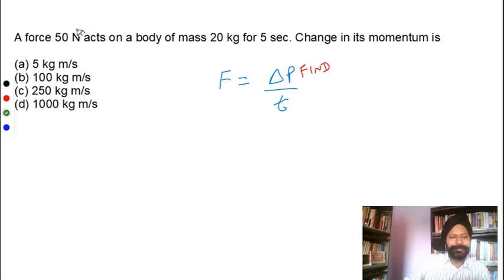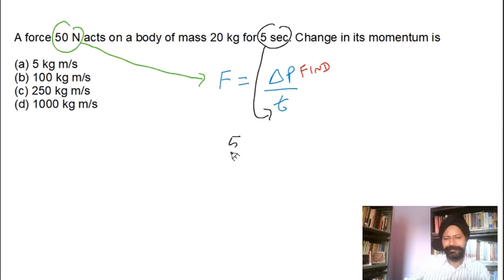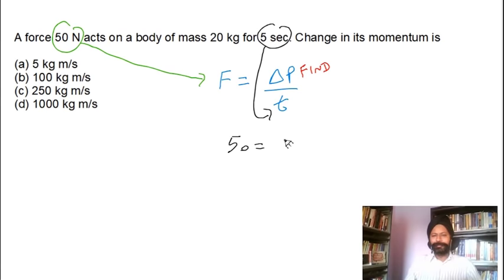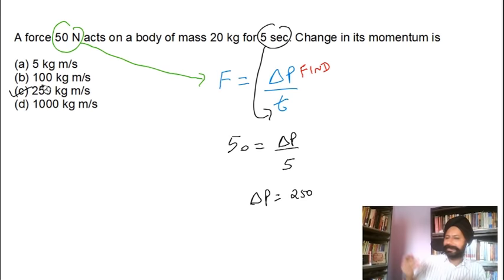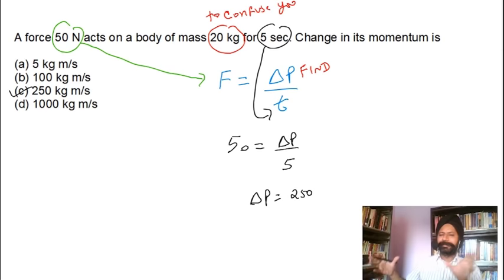For the next problem, students are saying they need velocity or acceleration, but actually you don't. Read the question carefully. The clue: write the second law as F equals delta p over t — not F equals ma. You're given the force and the time. So delta p equals F times t equals 50 times 5, which equals 250 kilogram-meters per second. The mass of 20 kilograms given in the question is extra information — it's not needed. Don't assume all given information must be used. Filter out what's relevant.